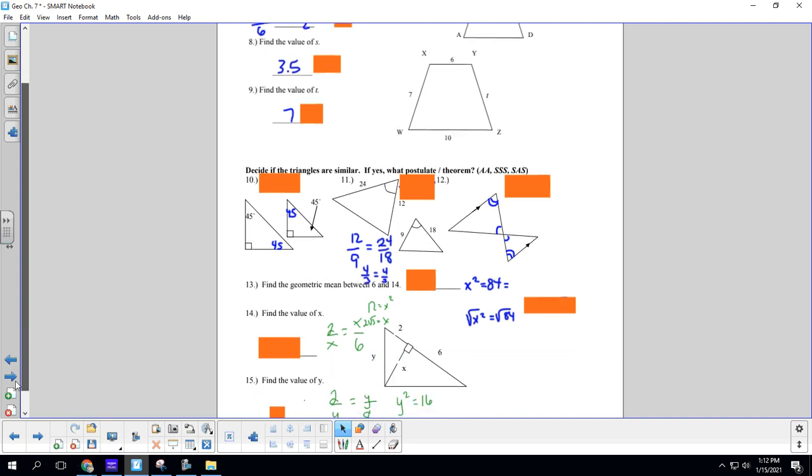All right. Number 10. Decide if the triangles are similar. If yes, with postulate or theorem. Angle, angle, side, side, side, side angle, side. These two triangles have a 45 degree angle and a 90 degree angle. So we say yes by angle, angle.